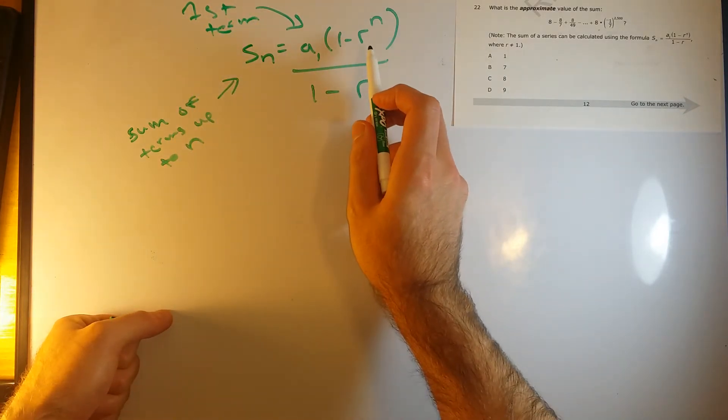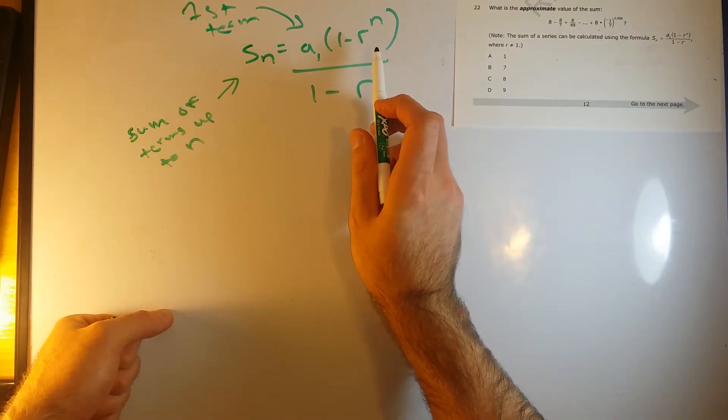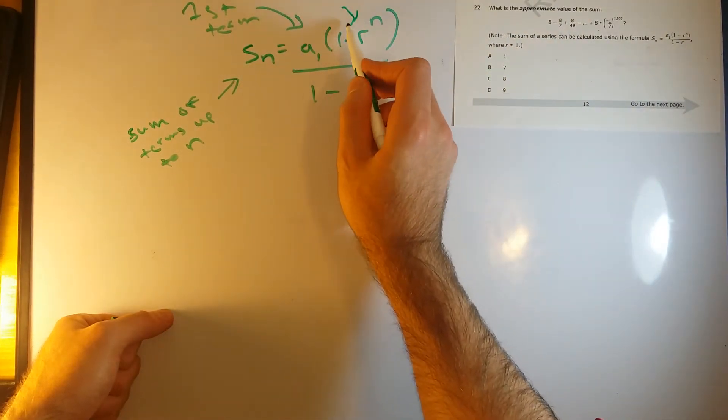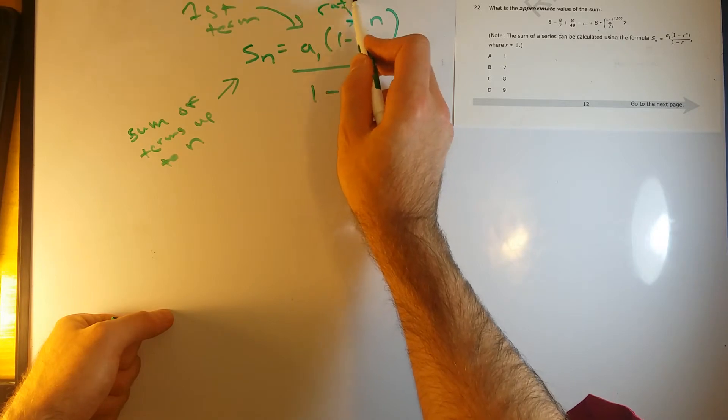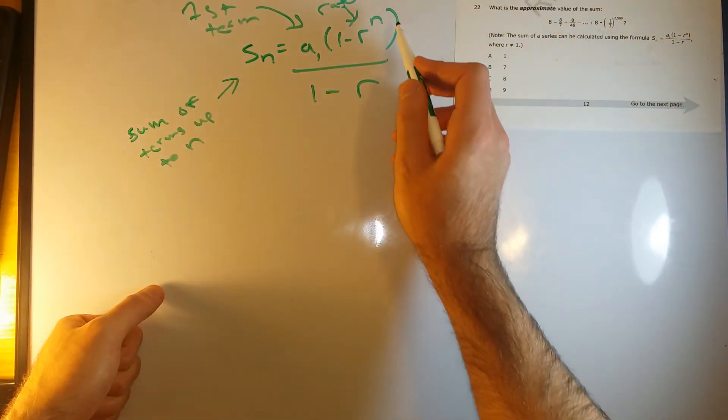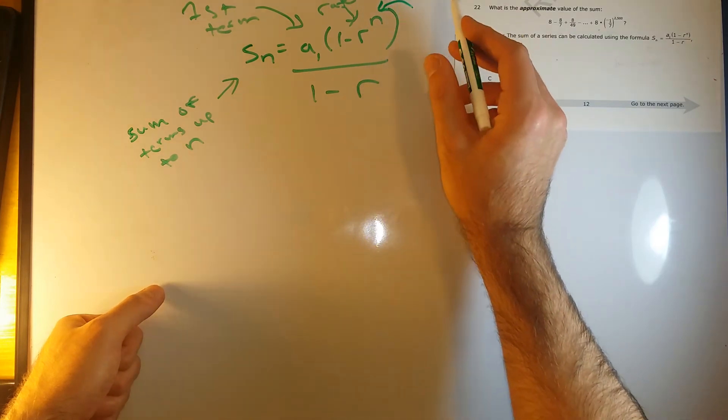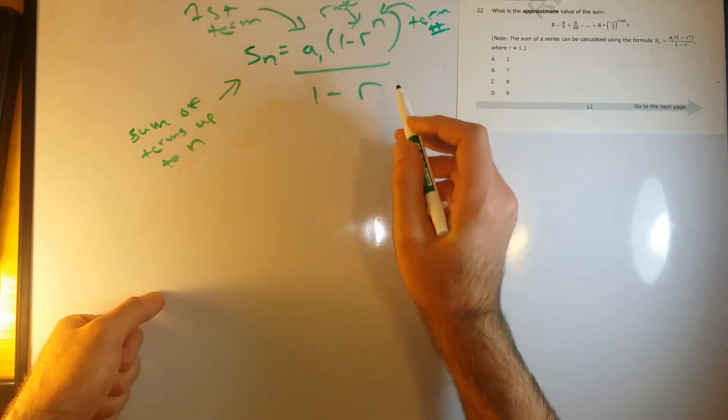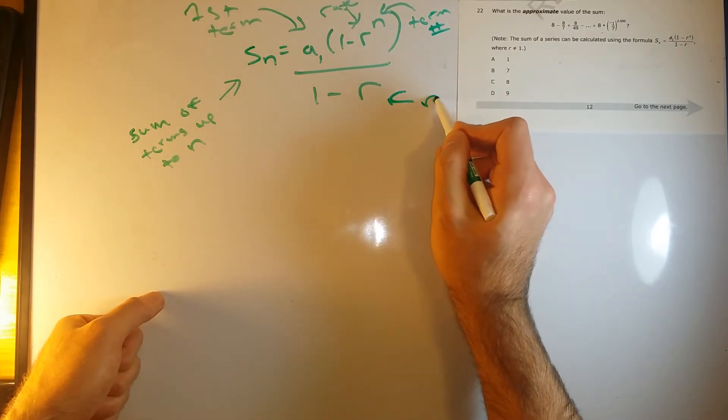And R. You can kind of think of R as like the rate or how much it's being multiplied each time. R is just whatever value it's being multiplied by each time. And N is the term number. And this R is also the rate.